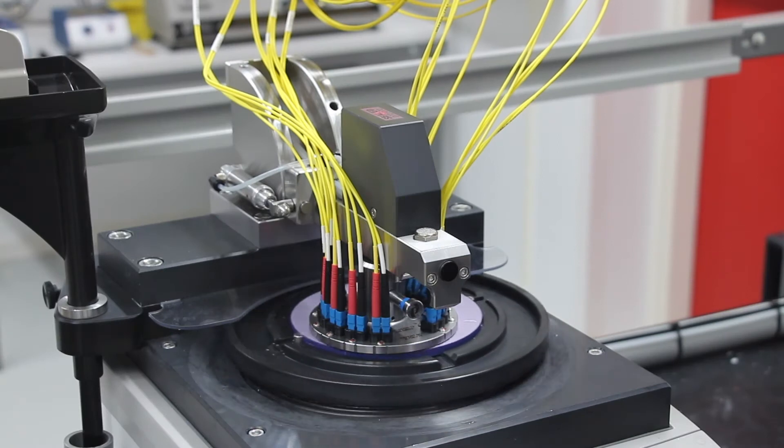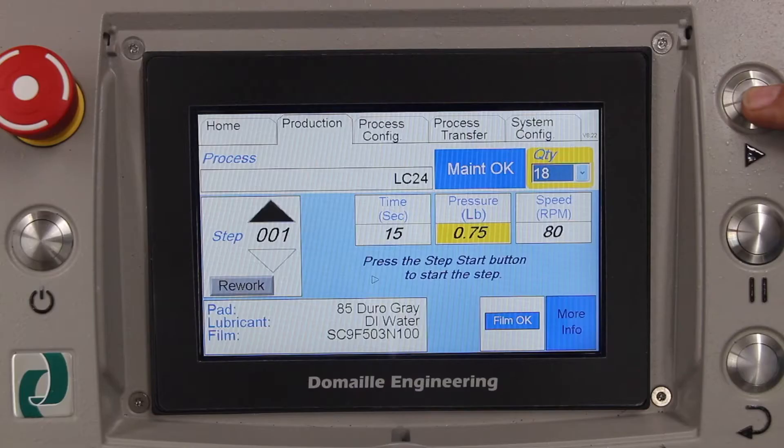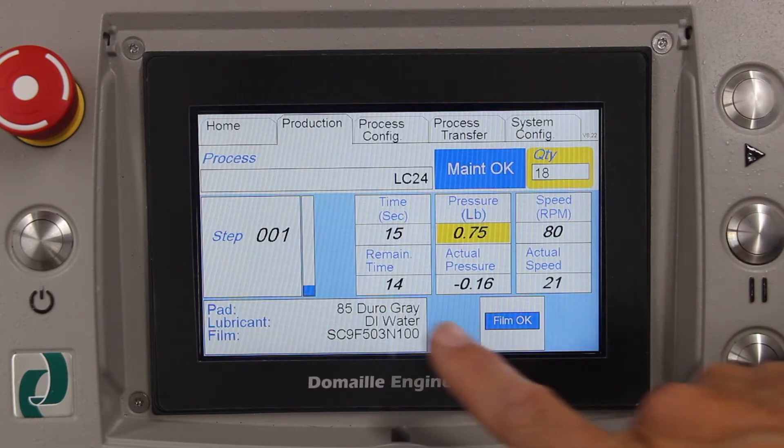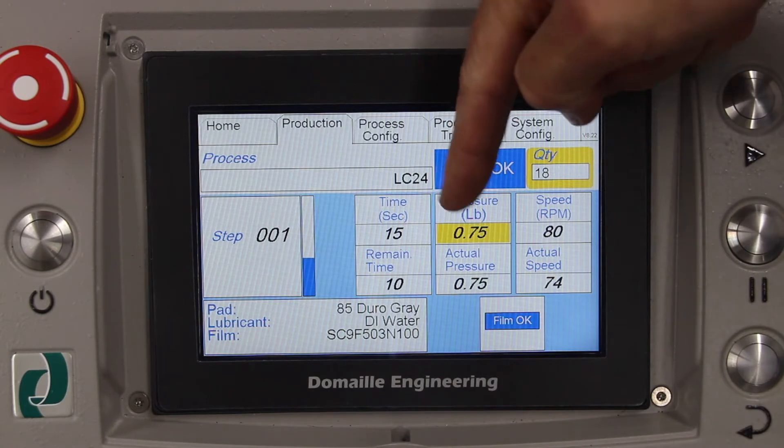The soft start on both rotation speed and fixture pressure minimizes potential film damage or fiber cracks. These parameters are stored in the machine memory showing the actual and preset values.